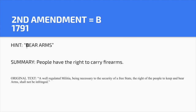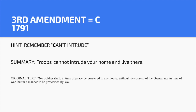Second Amendment — B. Hint: 'Bear Arms.' People have the right to carry firearms. This is such an open-ended amendment that it's up for interpretation, and it's a very controversial amendment. Third Amendment — C. Hint: 'Can't intrude.' Troops cannot intrude your home and live there. This was a huge problem when we were the original 13 colonies — British troops would quarter your houses. It's not really relevant nowadays.